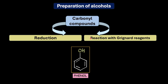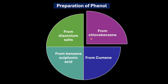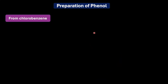We are going to walk through four different methods used to prepare phenol: from chlorobenzene, from diazonium salt, from benzene sulfonic acid, and from cumene. Along the way we will also see how and why these reactions work — not just what happens, but what makes it actually stick.